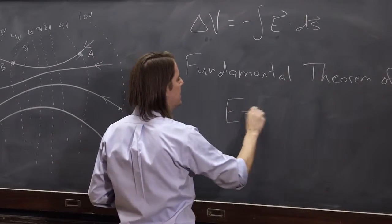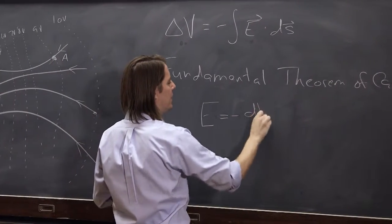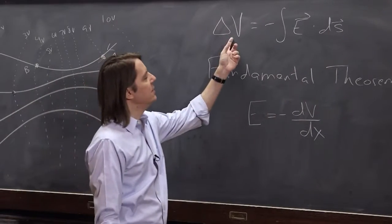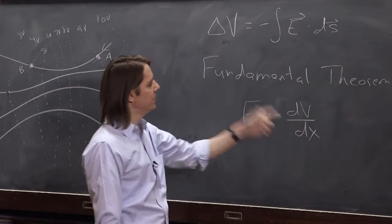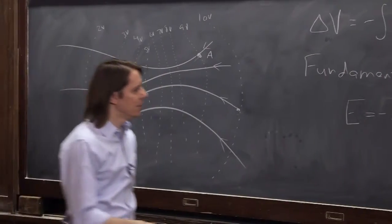In one dimension, E - we don't worry about the vector if it's in one dimension - E is minus dV/dx, what I just said. If V is the integral of E, then E is a derivative of V. And the minus sign is just along for the ride. So that's in 1D.